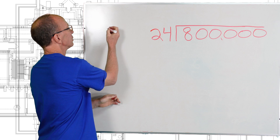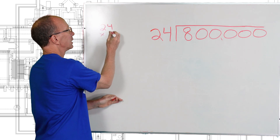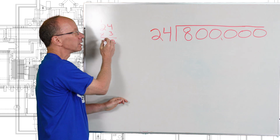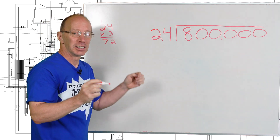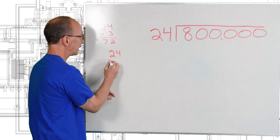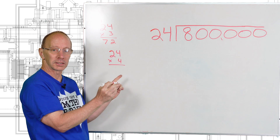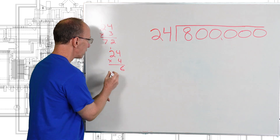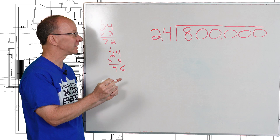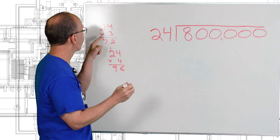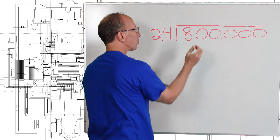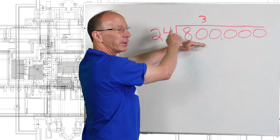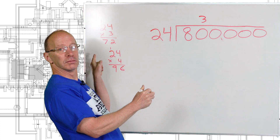So off to the side here, I'm just going to do a little figuring. I'm going to take 24 times 3. So 4 times 3 is 12, put the 1 up here, 3 times 2 is 6, plus the 1 would be 72. I'm going to go ahead and do 24 times 4. So 4 times 4 is 16, carry the 1, 4 times 2 is 8, plus the 1 would be 9. So 24 times 4 is 96 — that's too high. I need to go with 24 times 3. So I'm going to put the 3 right above this 0 here because I'm dealing with 80.